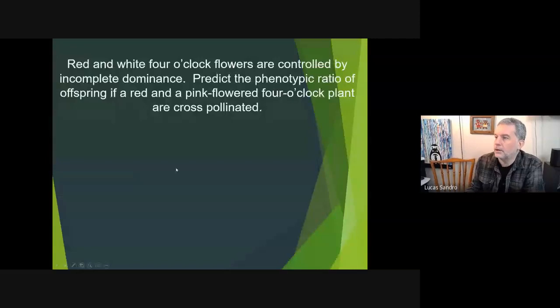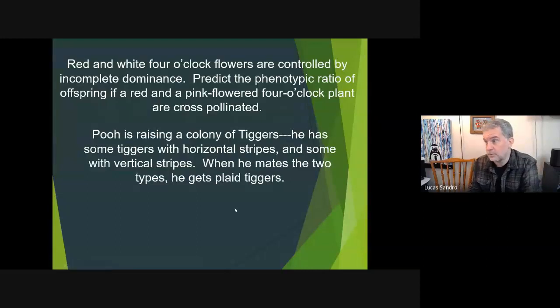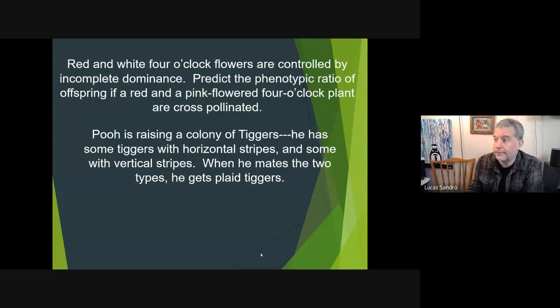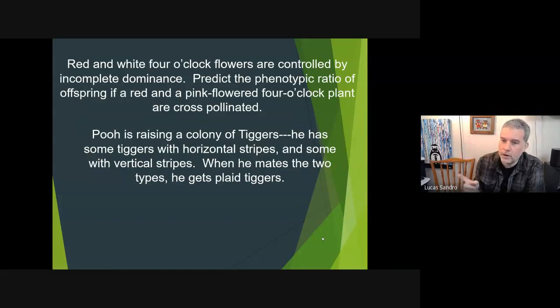In this problem, we're imagining Pooh raising a colony of Tiggers. He has some tiggers with horizontal stripes and some with vertical stripes. When he mates the two types, he gets plaid tiggers. First of all, I know - real weird. I didn't make it up, it's from a book. You know, we had examples for sex-linked, we know that blood type is codominance and multiple alleles, we know how eye color is both epistasis and polygenic.